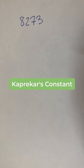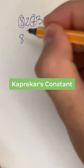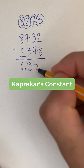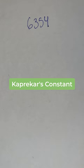First, I'll arrange the digits in descending order, and then subtract the same number written in ascending order. I do that, and I get 6354.